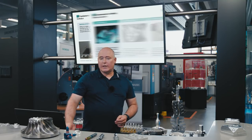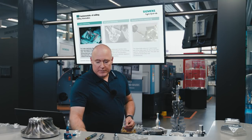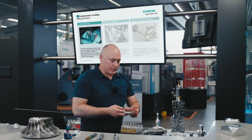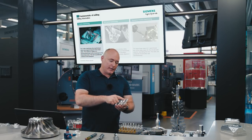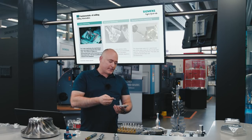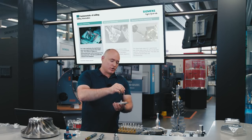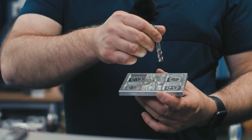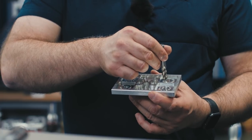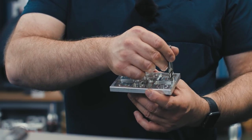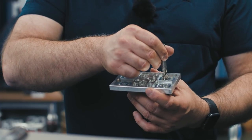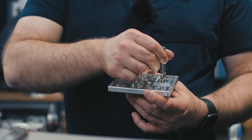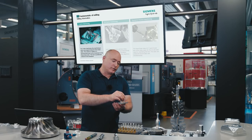If milling takes place only in the three main axes, it is called three-axis machining. You can see here a typical part for three-axis machining, in which the milling cutter is perpendicular to the machining surface. The material is removed by movements in the X and Y directions, and the in-feed in the Z-direction controls the depth of the pocket or contour.